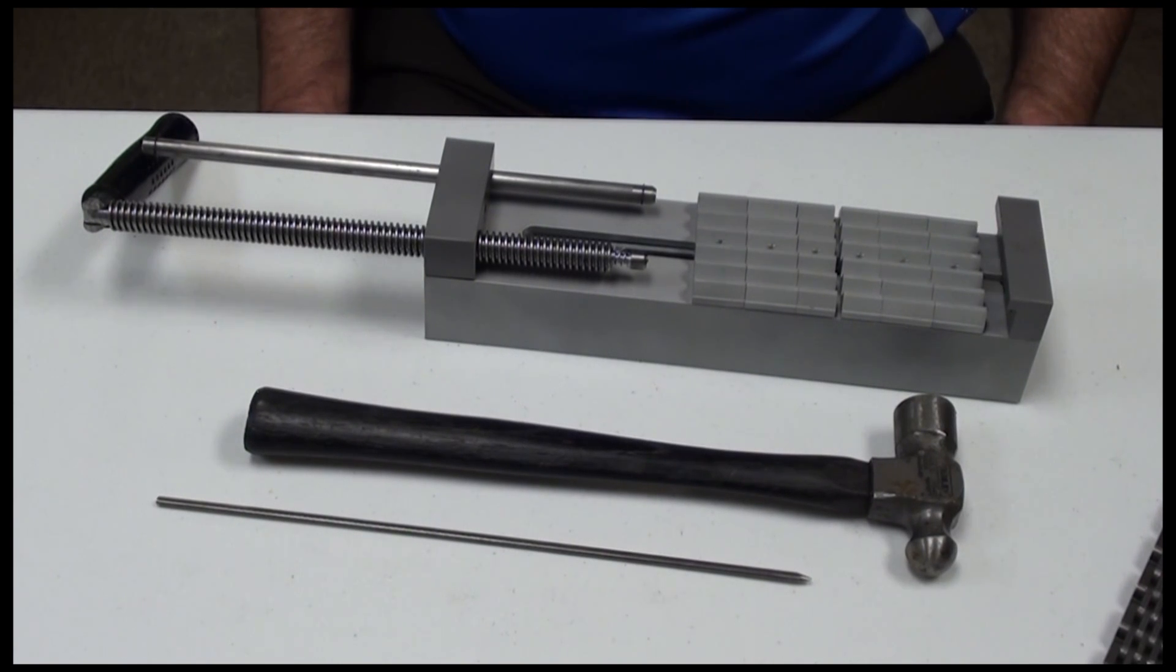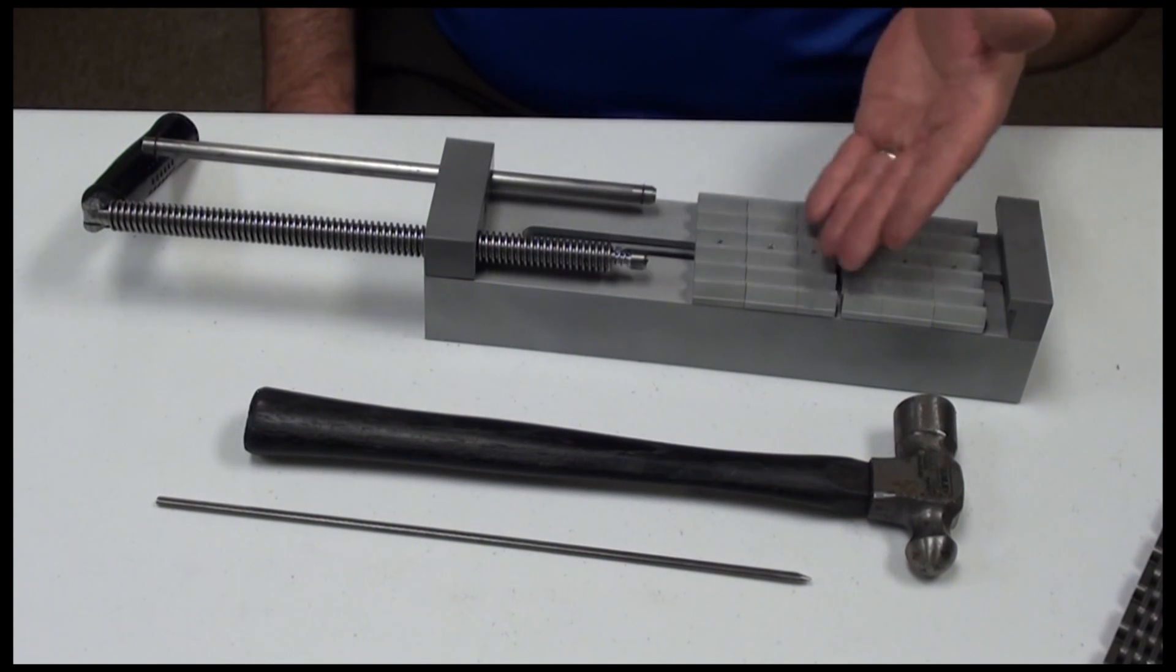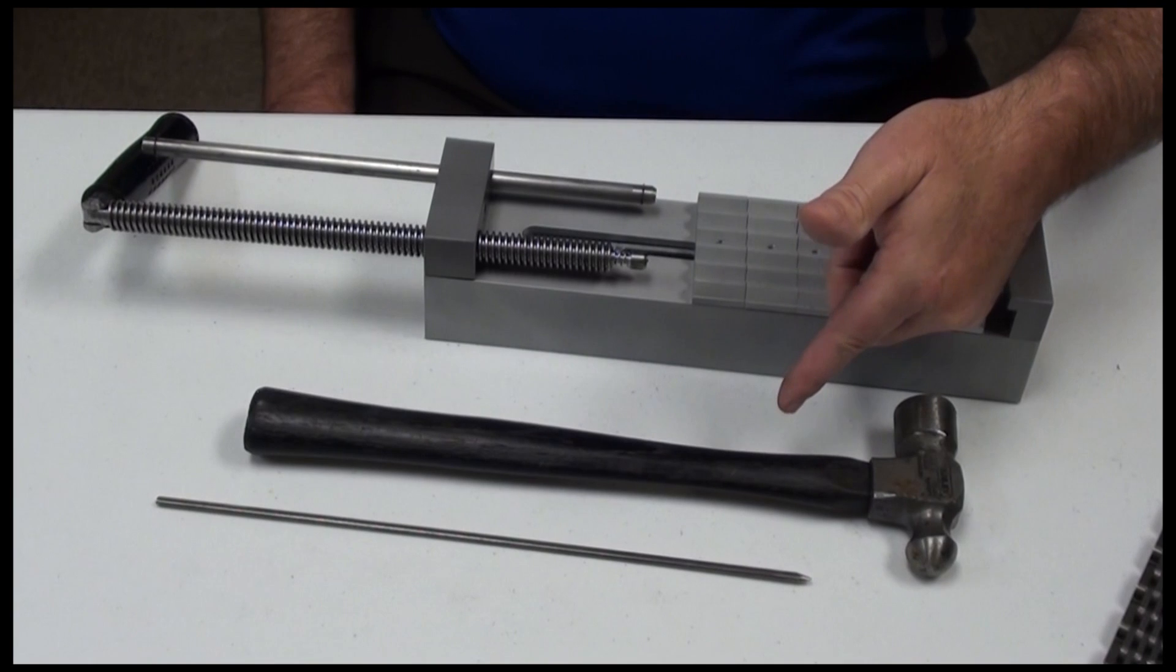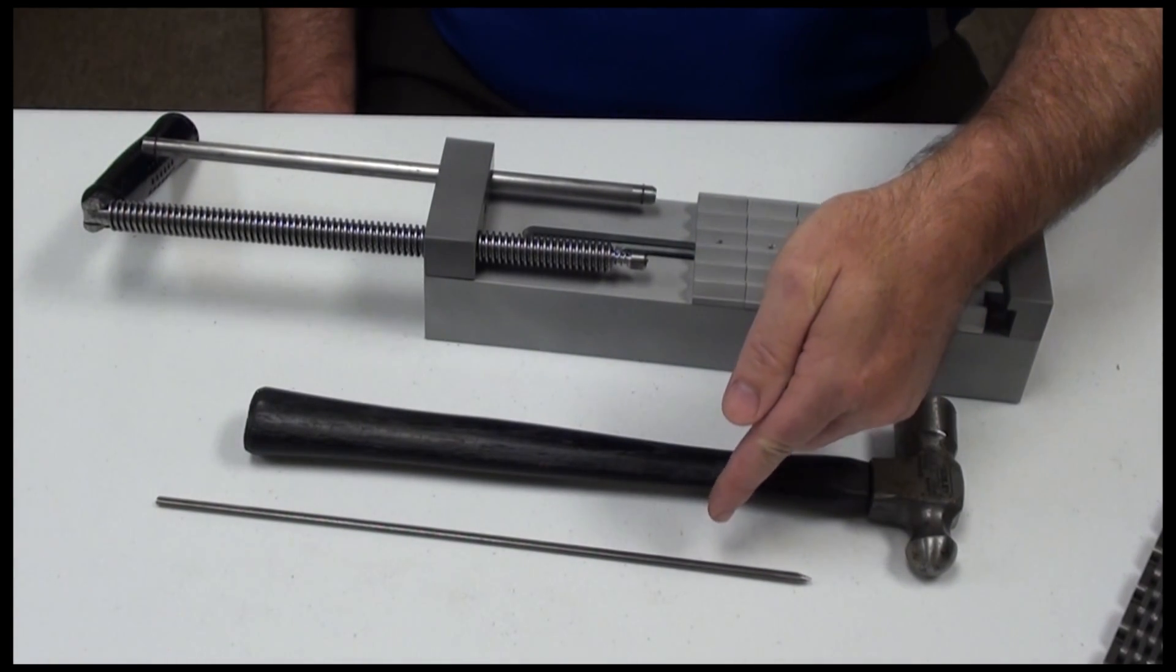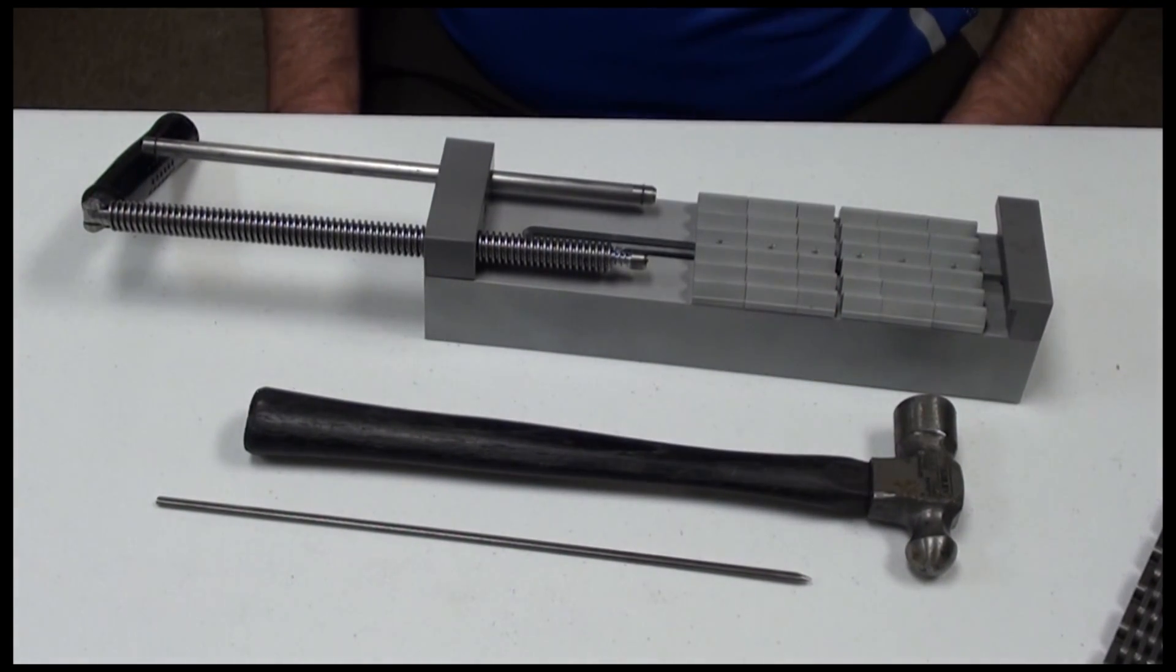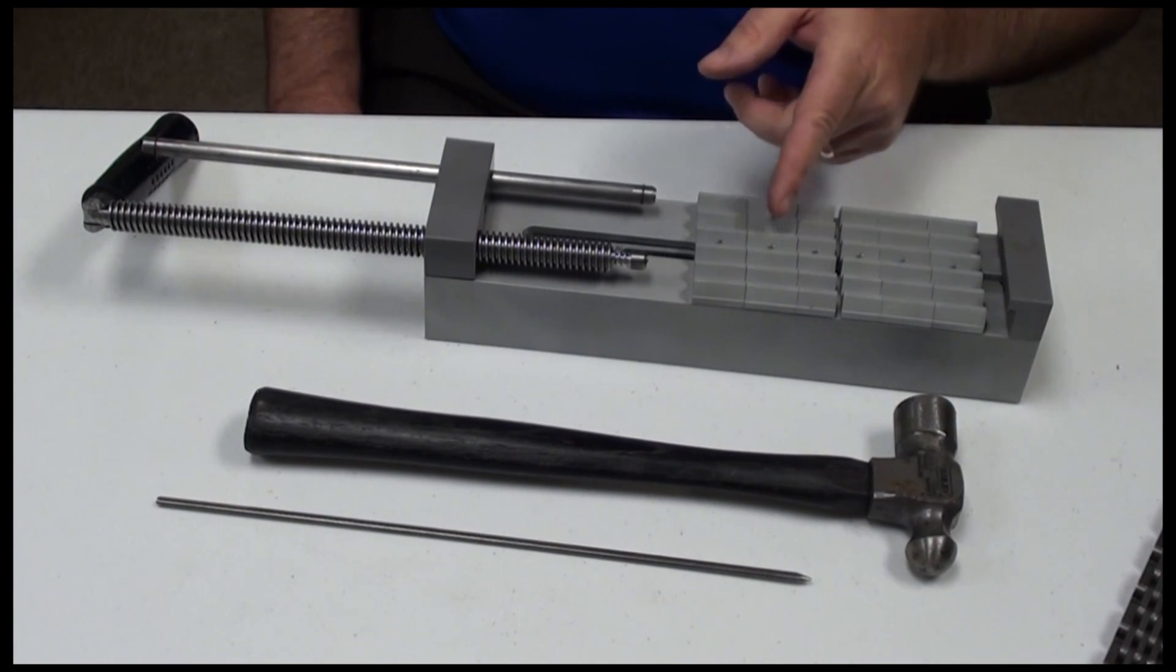Start by locating the hardware you will need: the RKO tool, a hammer, and the assembly pin with a tapered end that came in your kit. Make sure that the guide plate that's installed on your RKO knockout tool fits the chain being disconnected.